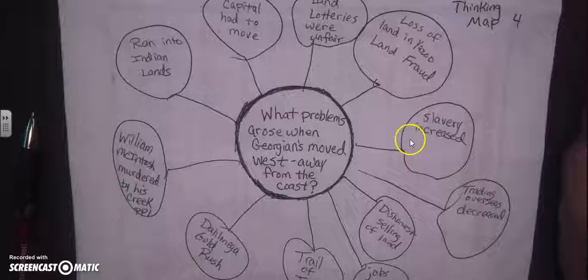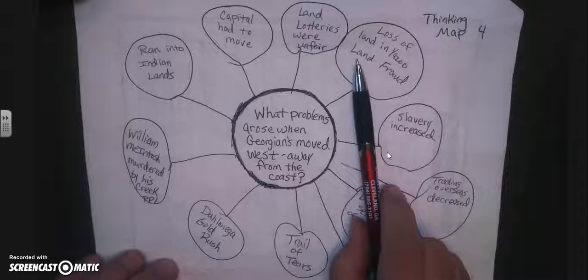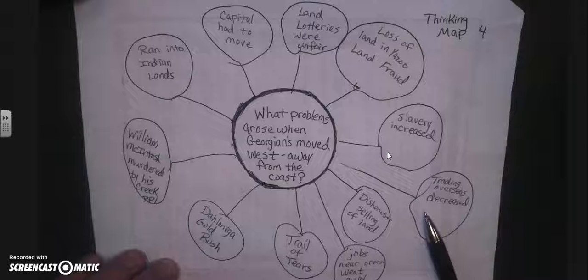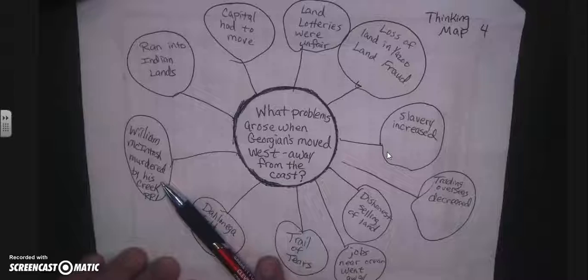A thinking map covered what problems arose when Georgians moved away from the coast. They ran into Indian lands, the capital had to move, land lotteries were sometimes unfair, there was the loss of land in the Yazoo land fraud, slavery increased, trading overseas decreased, dishonest selling of land occurred, and jobs near the ocean went away. Topics ahead include the Trail of Tears, the Dahlonega Gold Rush, and William McIntosh — the leader of the Creek — who was murdered by his own Creek people.